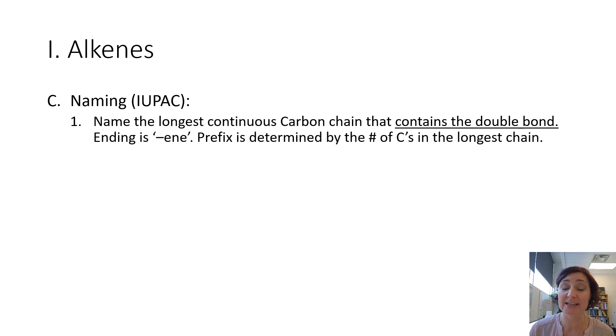So you have to make sure, however you count these, that you're including the double bond in your longest chain or you don't have an alkene. Instead of using an A-N-E ending like we did with alkanes, we're now going to change the ending to E-N-E. So we're going to use our prefixes: meth, eth, prop, but, and if it has a double bond, we'll end it with -ene.